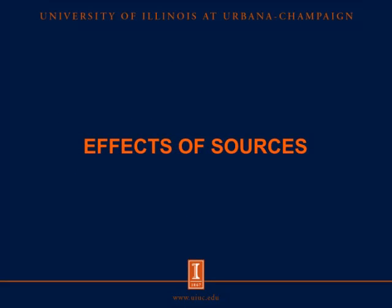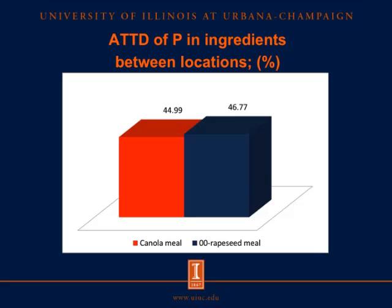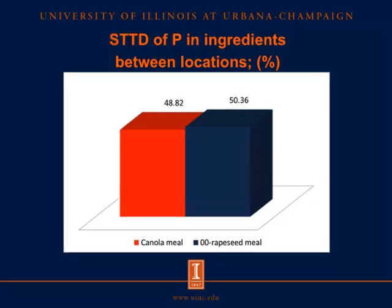Now moving to results on the effects of sources of canola meal and rapeseed products. For ATTD of phosphorus in canola meal and 00 rapeseed meal from different locations, the orange bars represent canola meal and blue bars represent 00 rapeseed meal. ATTD and STTD of phosphorus in canola meal and 00 rapeseed meal were not different.